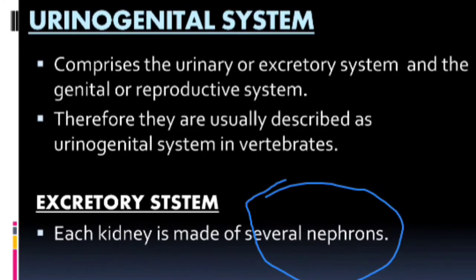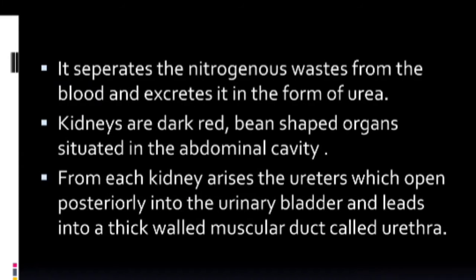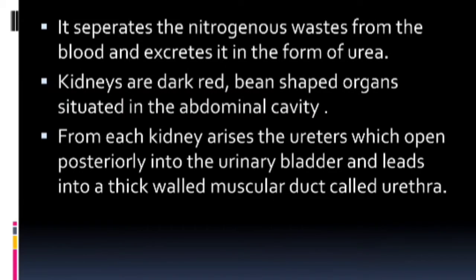The nephron is a highly coiled tubule where filtration of blood occurs. The waste is filtered and the blood is separated. Each kidney is made up of a number of units called nephrons. The function of the nephron is to separate nitrogenous waste from the blood and excrete it in the form of urea.